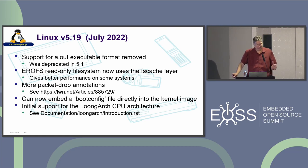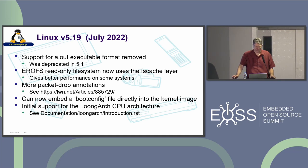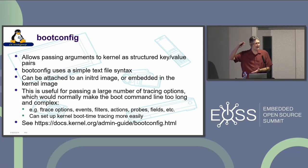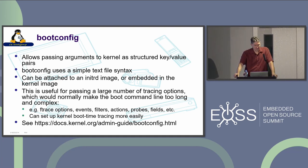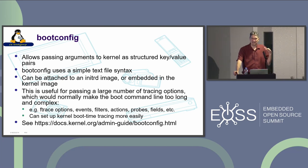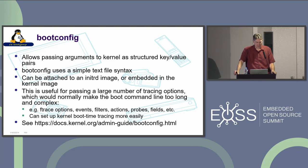There's initial support for the LoongArch CPU architecture — I think it's mostly being used in China. Boot config allows you to pass structured key-value pairs as a simple text file into the kernel. This can be attached to an initrd image or embedded directly into the kernel image. When building for an embedded system where you want to trace things going on at boot time, you can pass a large number of tracing options. If you've used ftrace before, you know it can get a little chatty — so you can add your events, filters, actions, probes, and fields. It allows you to set up kernel boot-time tracing more easily.